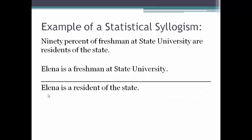Let's take a look at this example of a statistical syllogism: 90% of freshmen at State University are residents of the state. Elena is a freshman at State University, therefore Elena is a resident of the state. The top claim — that 90% of freshmen at State University are residents of the state — is the statistical generalization. It makes a claim about the members of one class, freshmen at State University, and their relationship to membership in another class, being residents of the state. Our second premise states a claim about a particular individual who is a member of that first class, and from these two pieces of information, we conclude that Elena is a resident of the state.